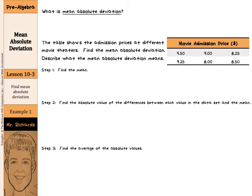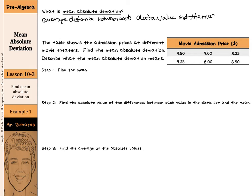Hi, Mr. Richards here. Today's lesson is on mean absolute deviation. What is mean absolute deviation? It is the average distance between each data value and the mean. So we're going to be calculating a mean of the set of data, taking a look at how far each point is away from the mean, and taking the average of that. It's another way to find variation.